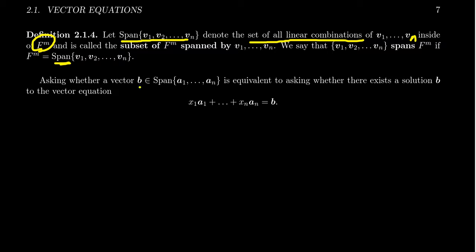So we could ask whether b belongs to the span of some vectors a1, a2, up to an. Now, asking if b is inside the span is the same thing as asking, is b a linear combination of a1, a2, up to an. And as we've seen in previous examples, determining whether b is a linear combination or not comes down to solving this vector equation. So if you're asked, is b in the span of these vectors, then that means you have to solve this vector equation.